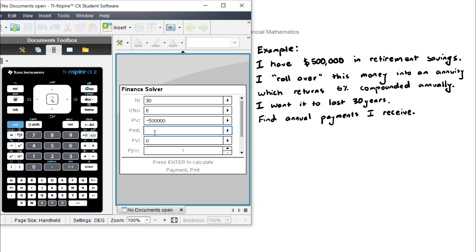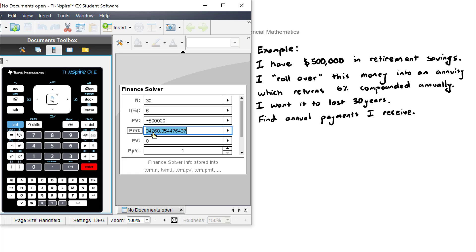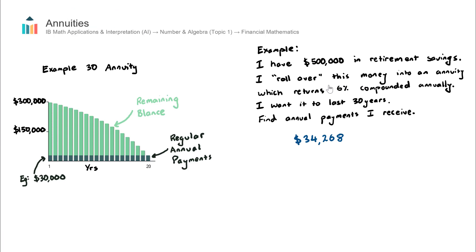We now go up to the empty cell — the payments per period — which is the payment I receive per year. I hit Enter, and notice it's a positive number. So from a cash flow perspective, I receive $34,268. With these characteristics — 6% over 30 years with $500,000 initial savings — I can guarantee fixed annual payments of $34,268. That's good for peace of mind: I don't need to worry about anything else. I can just go about my interests, whether it's playing golf or lawn bowls, and know I'll receive this every year.